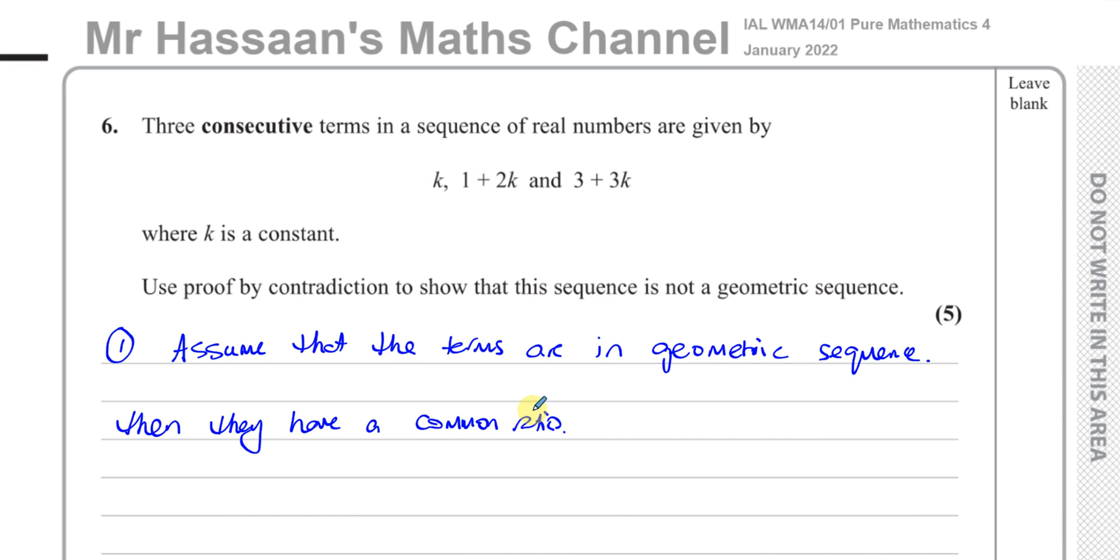So this means if they're in geometric sequence, there is a common ratio between them. If I divide one term by the one before it, it will give you the same ratio as that term divided by the one before it. The common ratio would be 3 plus 3k divided by 1 plus 2k, and that ratio should be the same as 1 plus 2k divided by k.